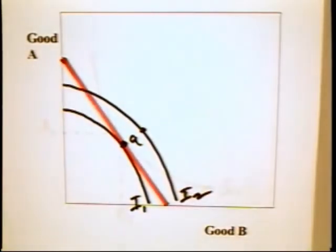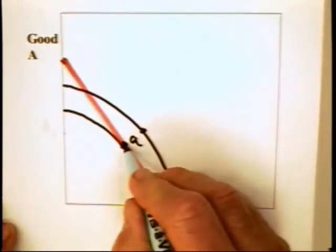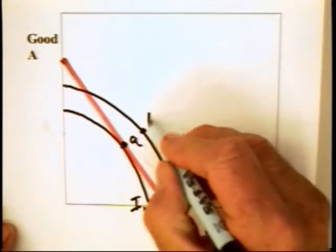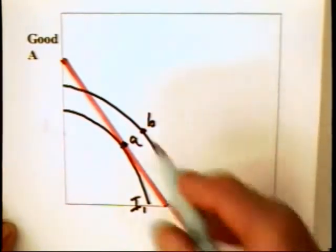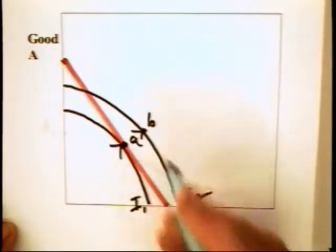But what about other shapes for the indifference curve? Suppose that the indifference curves are bowed out like what we have here. If that is the case, then it's possible that the individual could consume combination A. But we know that there is a combination like B that is of greater value to the individual than is A.